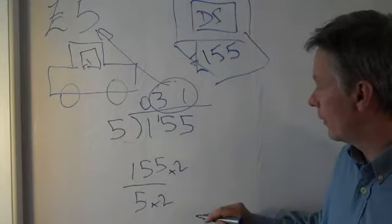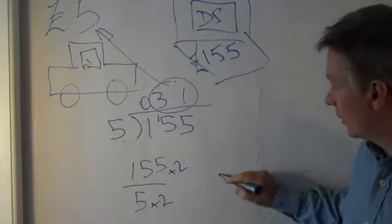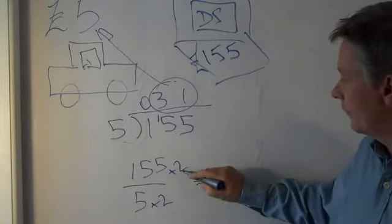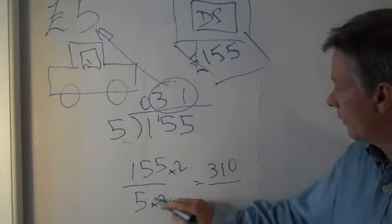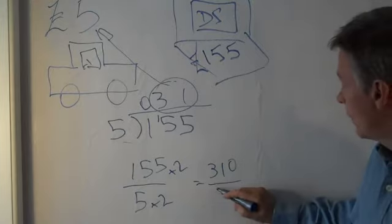But because I've done it at the bottom, I've got to do it to the top as well. So my question now becomes 155 times 2, which is 310, divided by 5 times 2, which is 10.